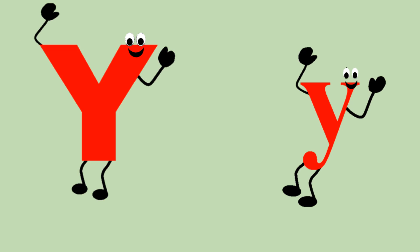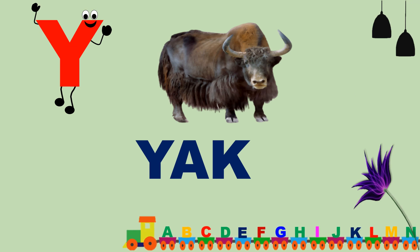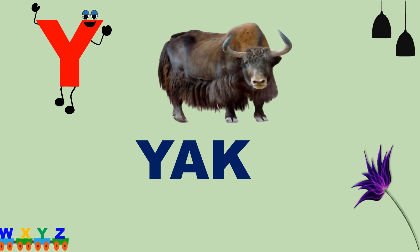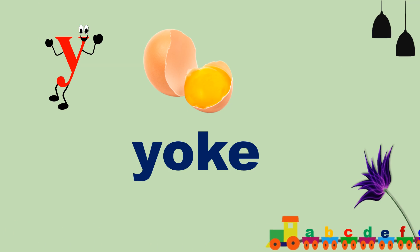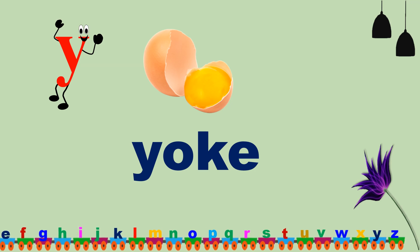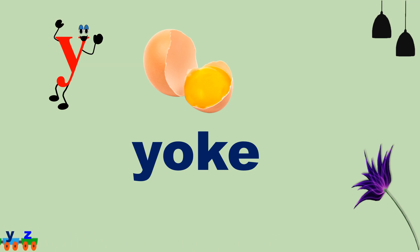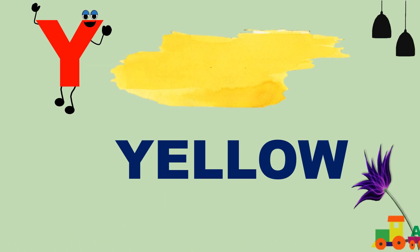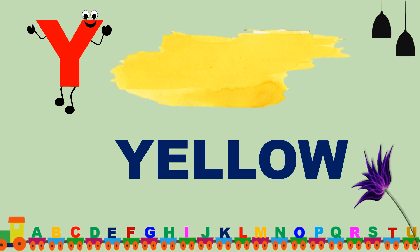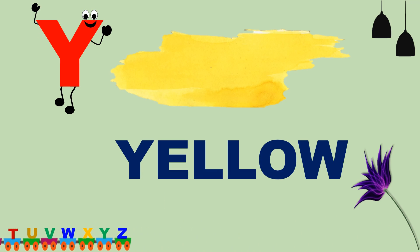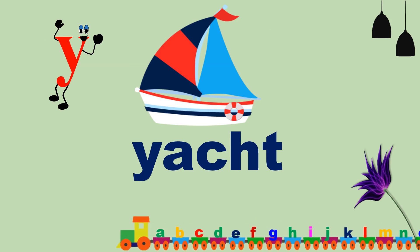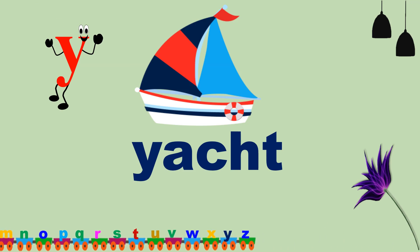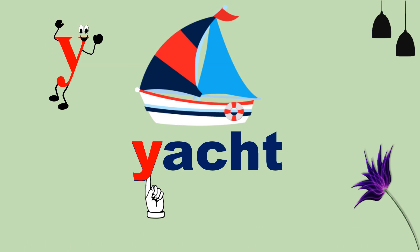Now we identify Captain Y and small y. This is a York. Where is the Captain Y? Here it is. This is a York. Where is the small y? Here it is. Where is the Captain Y? Here it is. This is a York. Where is the small y? Here it is.